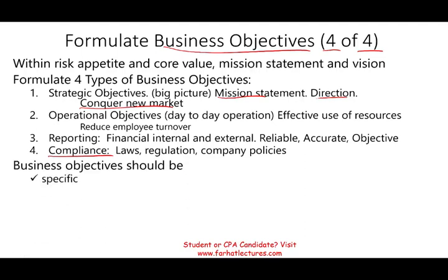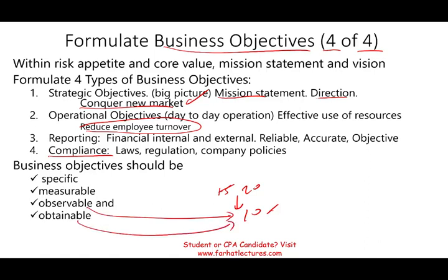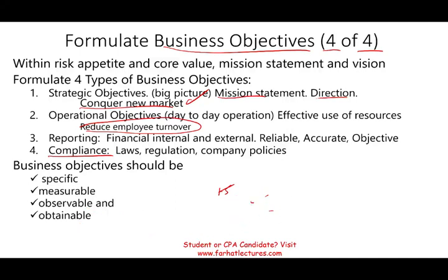All these objectives should be specific, measurable, observable, and obtainable. For example, conquering a new market is specific, but it also has to be measurable — how big should the market be: one million, two million, five million dollars? It must be observable, meaning we can measure and verify it, and obtainable — if it's not obtainable, business objectives are useless and actually demoralizing. Similarly, if employee turnover is at 20%, saying we want to reduce it to 10% is measurable, observable, and must be obtainable; if not, adjust the target accordingly.